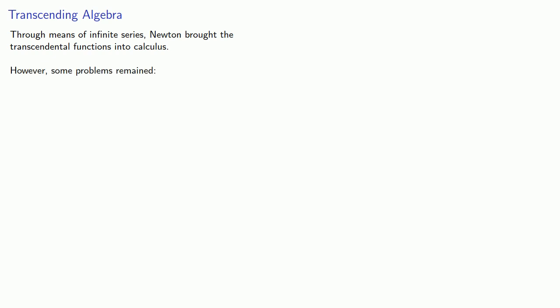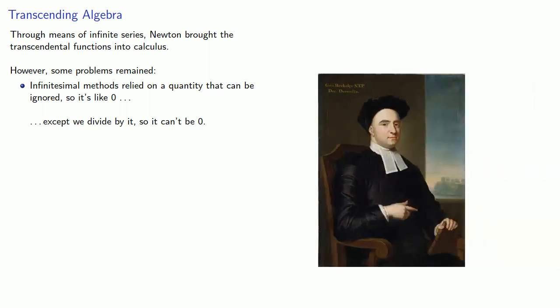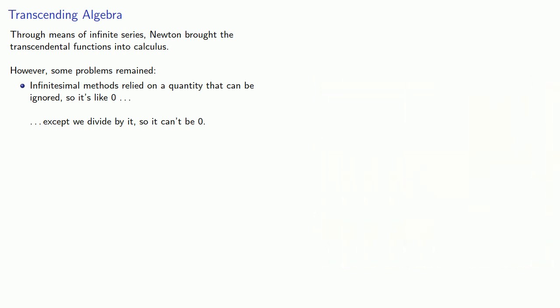These were all based on infinitesimal methods. And infinitesimal methods relied on a quantity that can be ignored, so it's like zero. Except we divide by it, so it can't be zero. Remember, this would later form the basis for Berkeley's objection to the calculus. The other problem was more subtle, because it wasn't really noticed until much later. Newton claimed in modern terms that these power series actually converge, but they don't always. These problems were mostly ignored.